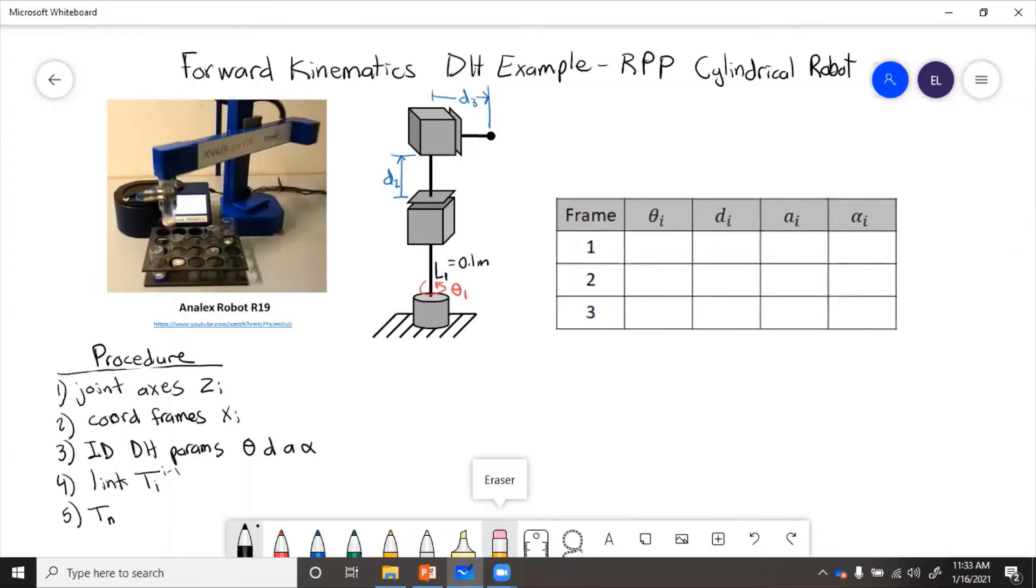So t in frame 0 equals t1, 0 times t2, 1 times dot dot dot ti, i minus 1. So for this example, we're just going to get to the point where we fill out this table of parameters. And from there, it's just plug and chug with the transformation formulas and matrix multiplication.